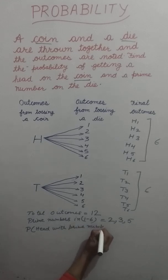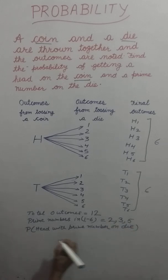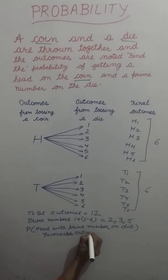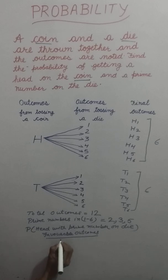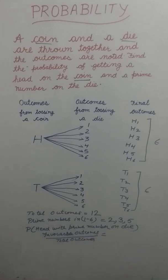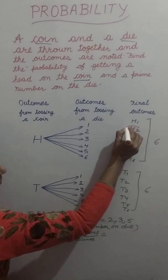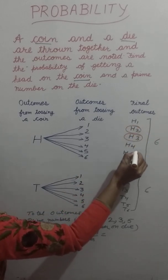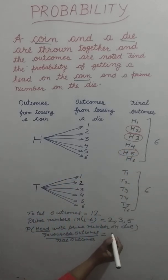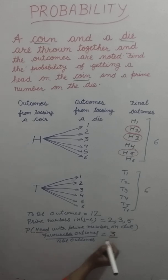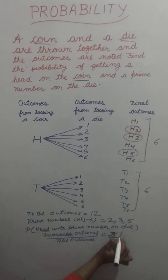The probability of getting head with a prime number on the die equals favorable outcomes over total outcomes. My favorable outcomes are: head with two, head with three, and head with five — so there are three favorable outcomes. Total outcomes are twelve. Therefore my probability is three over twelve, which equals one by four. Thank you.